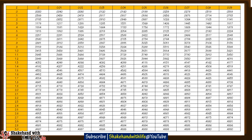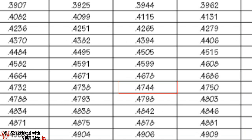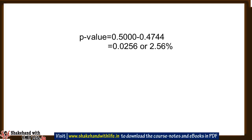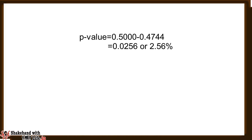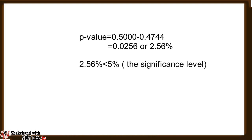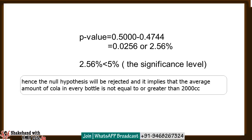Now calculate the p-value for the calculated Z statistic and compare it with alpha of 5 percent. Using the table for areas of the Z distribution, the area corresponding to 1.95 is 0.4744. Hence the p-value is calculated as 0.50 minus 0.4744, which equals 0.0256, or 2.56 percent. Since the p-value is less than 5 percent under the left-tail test, the null hypothesis is rejected, implying that the average amount of cola in every bottle is not equal to or greater than 2000 cc.